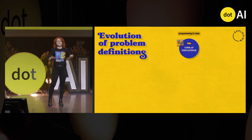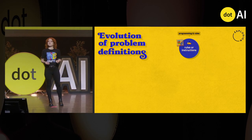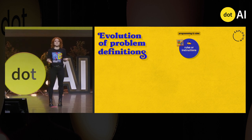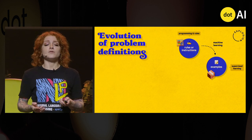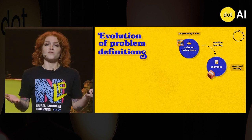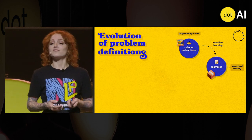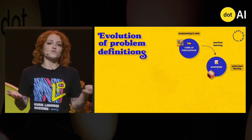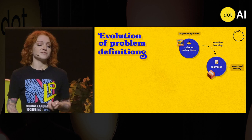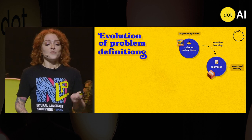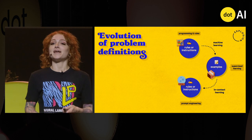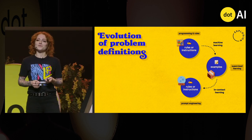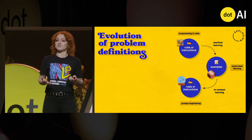In the beginning, we had rules and instructions — things like conditional logic or regular expressions. And now with machine learning, we unlocked another way of telling computers what to do: programming by example, also called supervised learning. And now with in-context learning, we have yet another way of telling the computer what to do, and that's with natural language prompts.